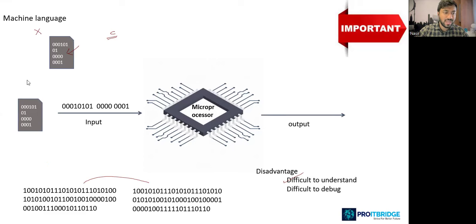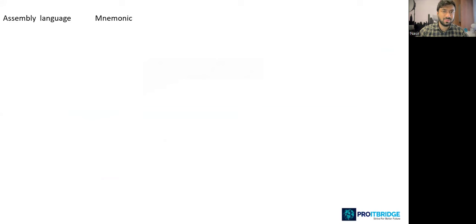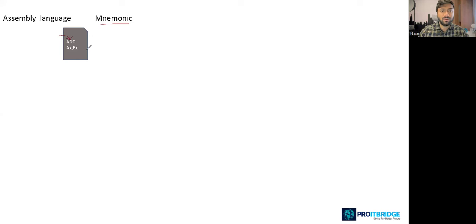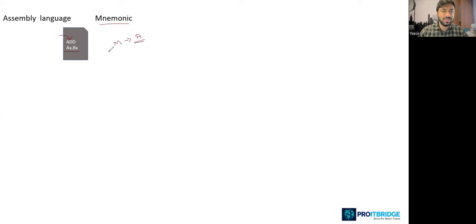Because machine language was so difficult, scientists decided to come up with a new language — assembly language. In assembly language, we started to use mnemonics: short forms and registers. For example, 'ADD AX, BX' — we can understand that some addition is going on between AX and BX. Compared to machine language, assembly level language was a bit easier to understand.